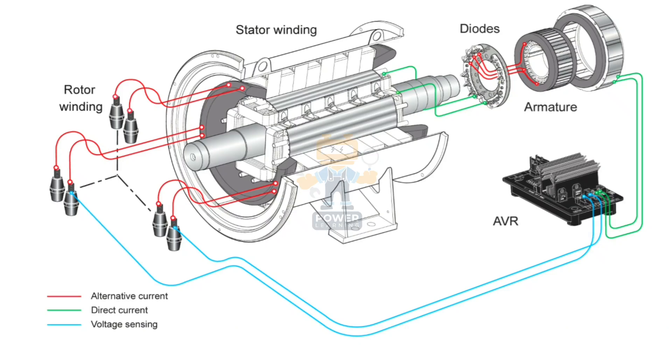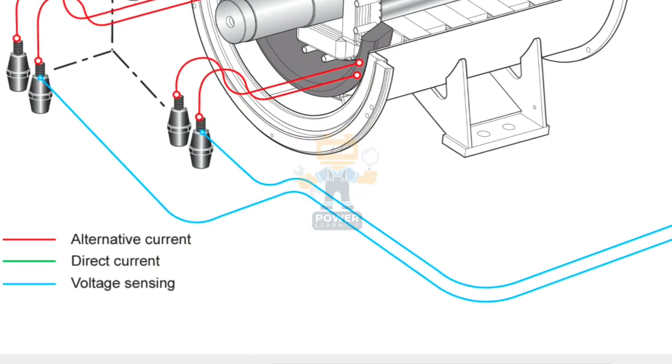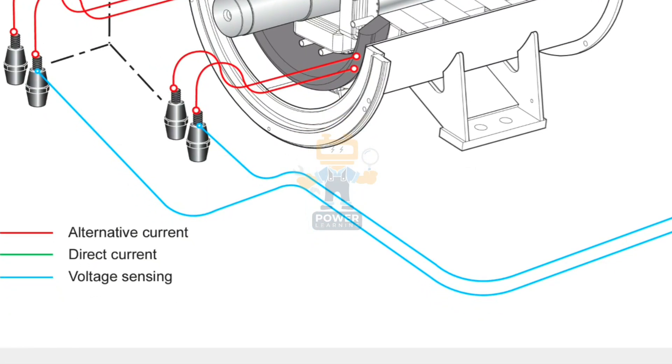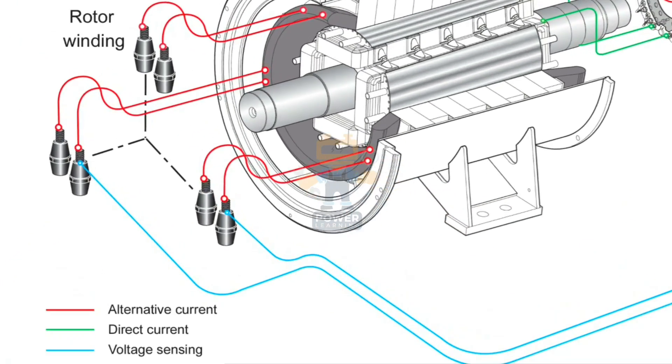Before starting, we have three color codings. If you see anything red, it shows these wires are carrying alternating current. Green means it is carrying direct current, and blue means voltage sensing wires.